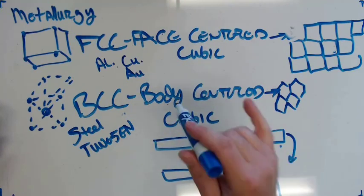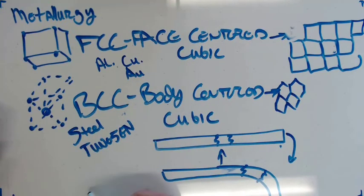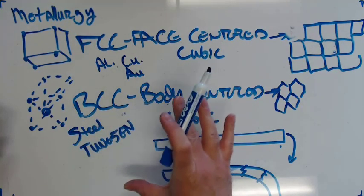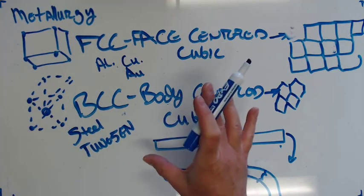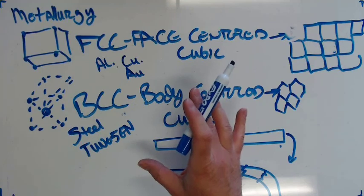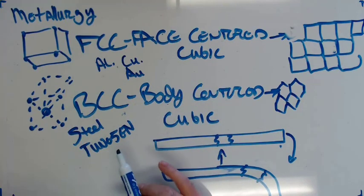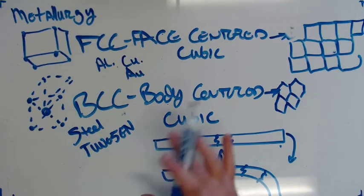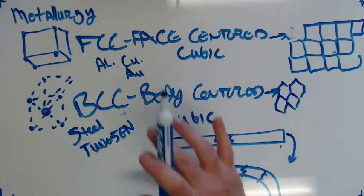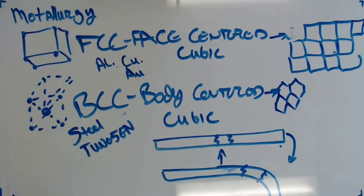So those are the common crystalline structures. There's one more, which is hexagonal close-packed. We'll talk about that next year. It really doesn't apply to welding. This is the only stuff that applies to welding for right now. I'm going to stop here, and I'll start another video in a minute. We're going to talk about properties of metal.